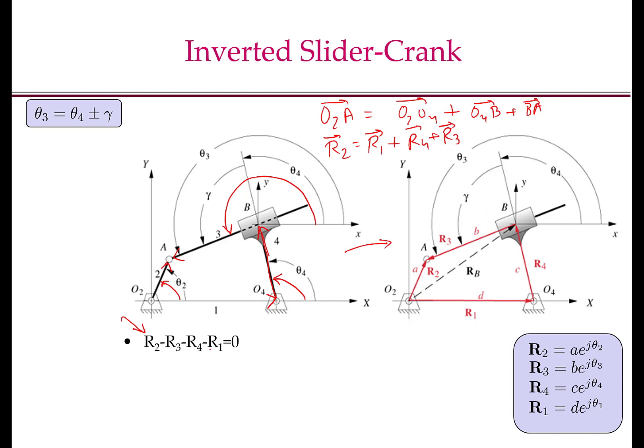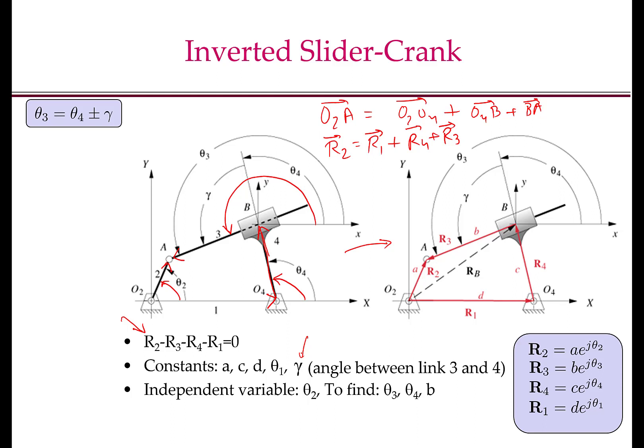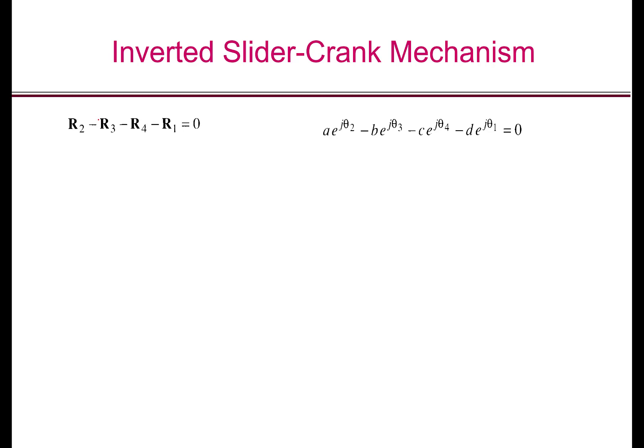We know each one of these Ri's in terms of the link lengths and the angles. So we have to understand what are our variables and what are the unknowns to solve for. Here A, C, D, theta-1, and the angle gamma are constants. The independent variable is theta-2, which varies as the mechanism moves, but its value is known for position analysis. We have to find theta-3, theta-4, and B, with the extra equation theta-3 equals theta-4 plus or minus gamma. Substituting the complex number form into the vector loop closure equation, we get the equation shown here.